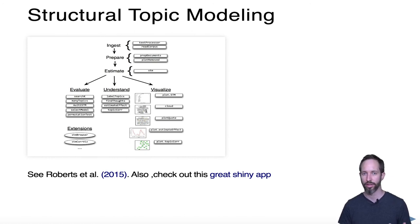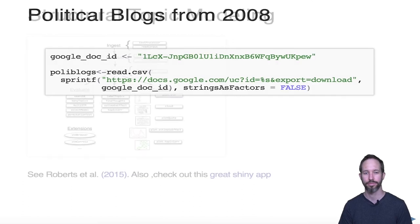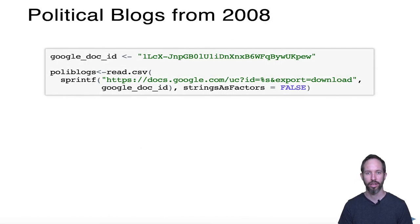I'm going to draw heavily on the vignette by the authors of the package themselves. Here we're reading in a dataset of political blogs from 2008. I put it on a Google drive and we're simply reading it in with read CSV. If you browse the document, you'll see that each row is a different document or blog post. There's a little bit of information on the date in which the blog post was produced, the name of the blog, and then whether or not the blog is liberal or conservative. That variable in this dataset is called rating.